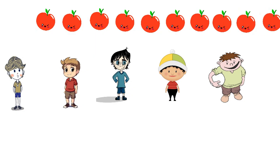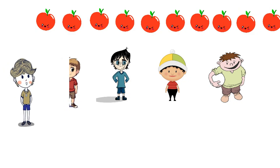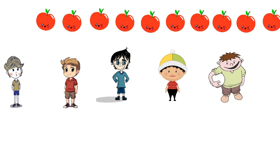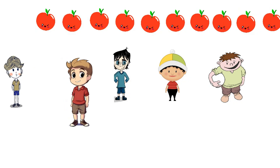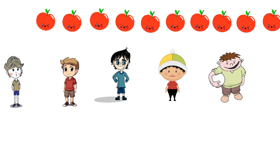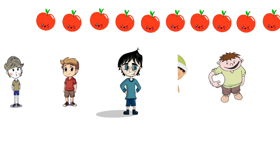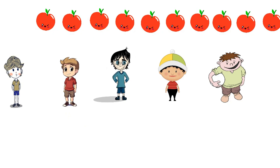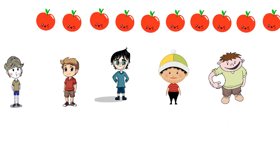And we have five children. The first one, the second two, the third three, the fourth four, and the fifth five.